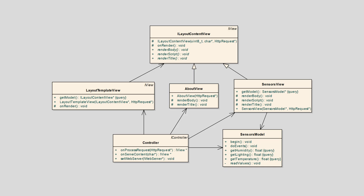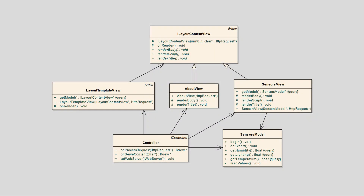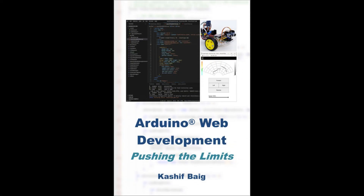Also look at the main application loop. Be sure to download the source code and adapt as required for your circumstances. See if you can integrate the web API as well, as I demonstrated in a previous presentation. View rendering is covered extensively in my book Arduino Web Development Pushing the Limits.